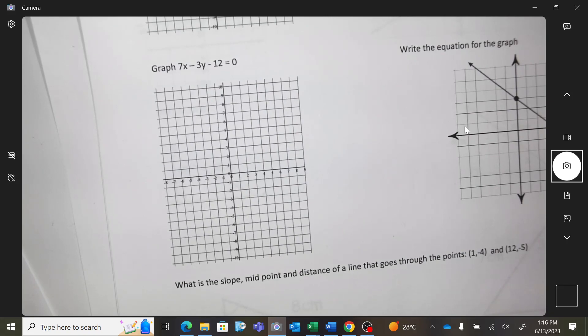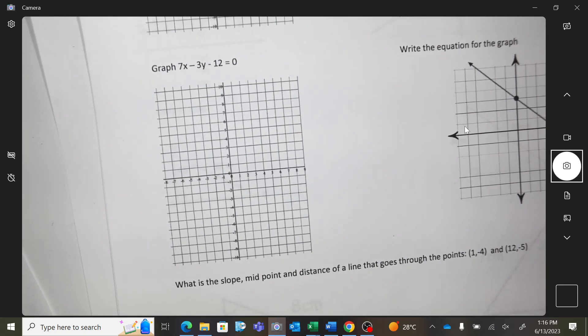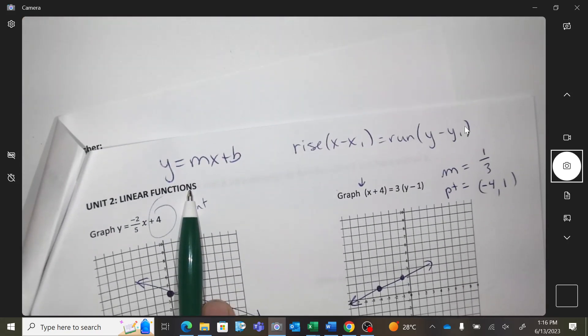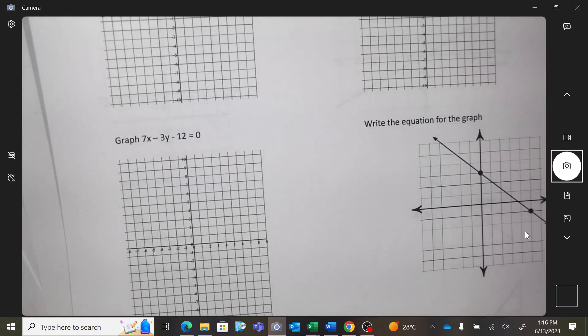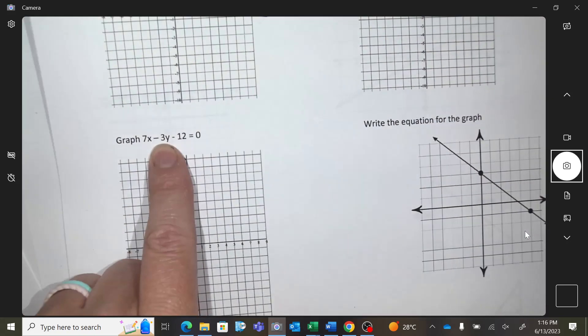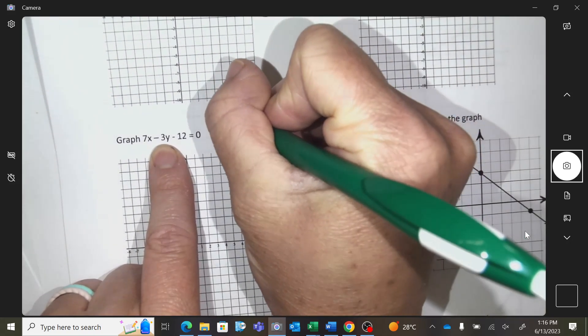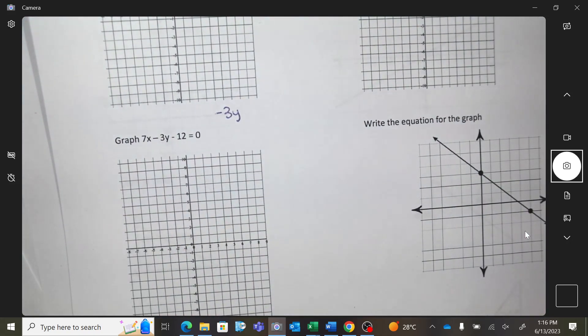So let's graph this one. What do I do to graph this one? It doesn't look like any of the top ones. Any suggestions for strategy then? Move stuff around. Separate. What is the goal? What do I want it to look like when I'm done? Y equals. Just Y alone. So here's what I'm going to do. I'm going to keep the Y stuff, which means negative 3Y. I'm keeping the Y stuff.